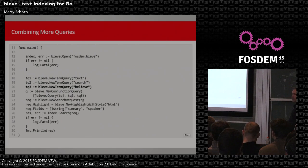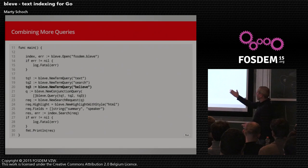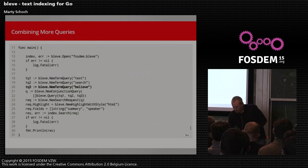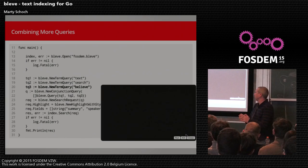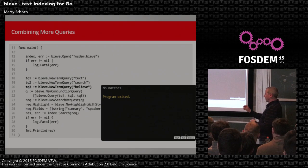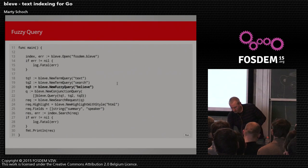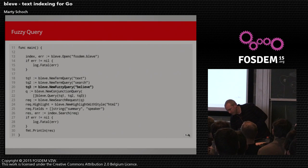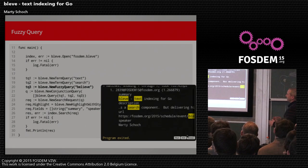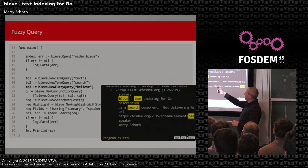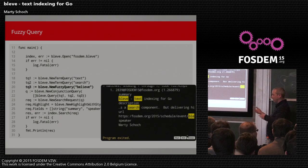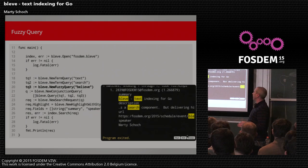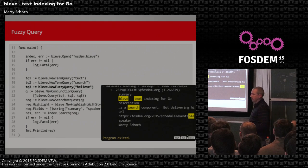Let's say someone heard about this library called Bleve but types it in as they heard it — an English speaker might type 'believe'. Adding that as a term search alongside text and search produces no matches, because none of the documents have text, search, and believe. But what if instead of a term search for 'believe' we do a fuzzy search? The fuzzy search finds anything with a Levenshtein distance of two or less. Bleve is a Levenshtein distance of two away from 'believe', so it ultimately highlighted the bleve term inside the document.